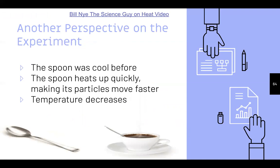What about the spoon? The spoon was cool before being put in the coffee, then it heats up quickly, making its particles move faster — and the coffee's temperature decreases slightly. When you stir the coffee, the heat from the coffee transfers to the metal spoon, making the spoon hot, but also making the coffee a little colder as the cold energy from the spoon transfers back to the coffee.